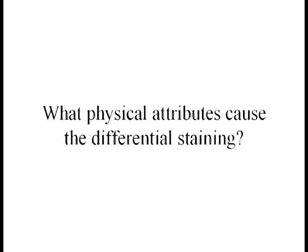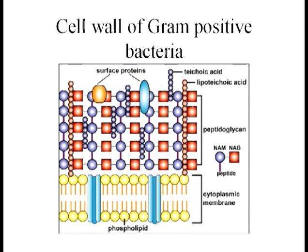What physical attributes cause the differential staining in these bacteria? As we'll see in a moment, it mostly has to do with the structure of the cell wall. First, let's take a look at the cell wall of the gram-positive bacteria. The main thing we want to focus on here is this layer of peptidoglycan, which is illustrated by these red square purple circle complexes. In a gram-positive bacteria, this is a relatively thick layer, demonstrated here by there being five square-circle complexes deep. The other part of the cell wall of a gram-positive bacteria is the cytoplasmic membrane, which is composed of a phospholipid bilayer.